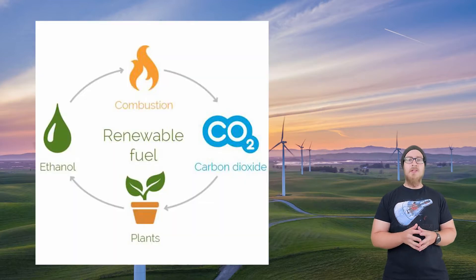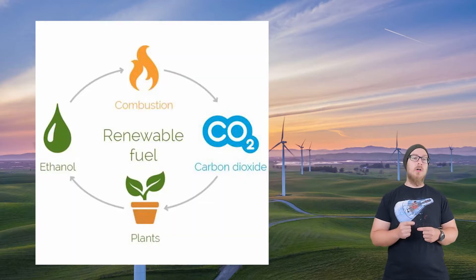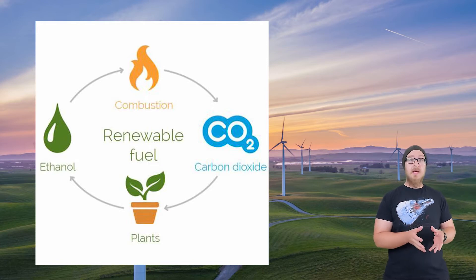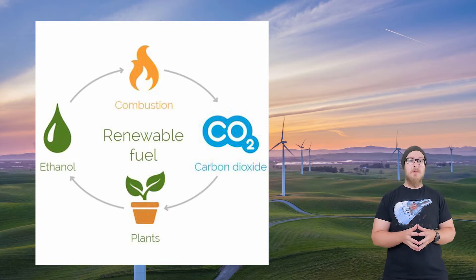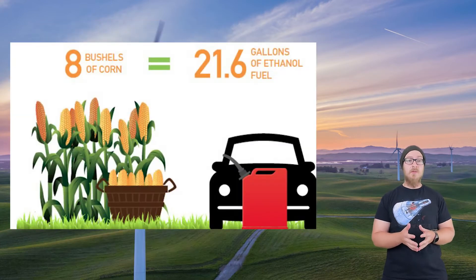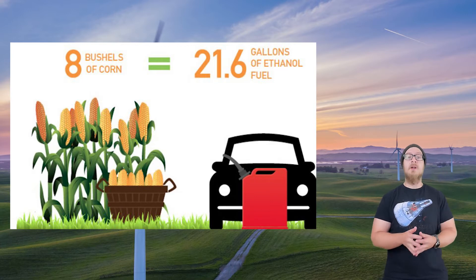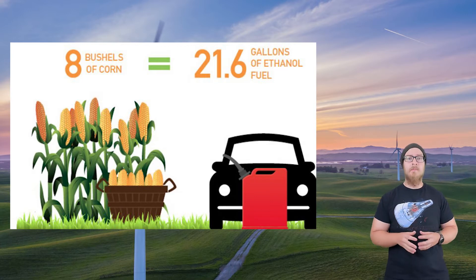Burning ethanol doesn't introduce additional carbon into the atmosphere because it's carbon neutral. The carbon in the ethanol was absorbed from the atmosphere through photosynthesis when corn — the major crop grown for ethanol production — was growing.